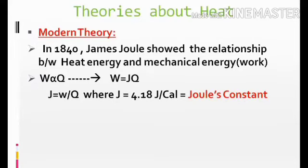This equation can be written as J equals W upon Q, where J is Joule's constant, W is mechanical work done, and Q is heat energy required. J equals 4.18 joules per calorie—its constant value is called Joule's constant.